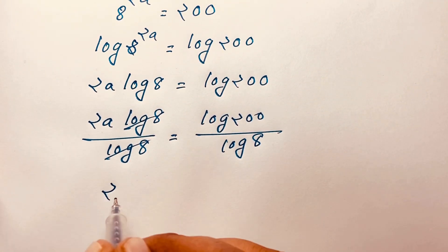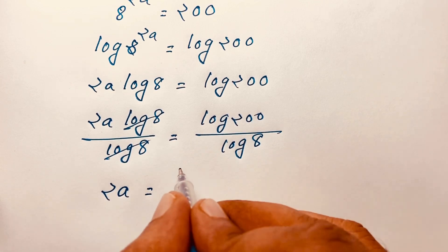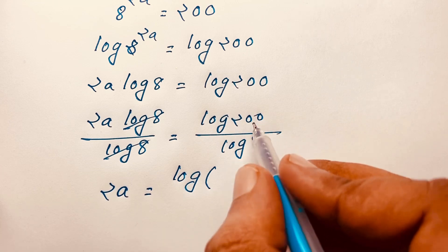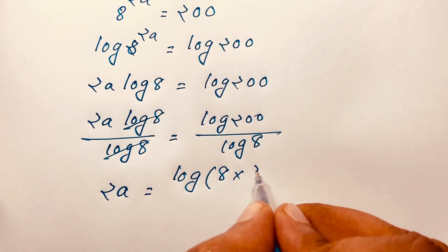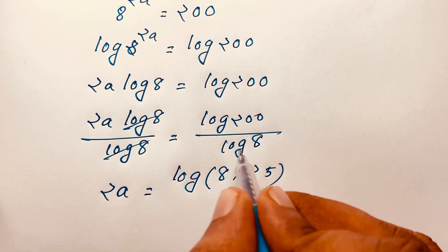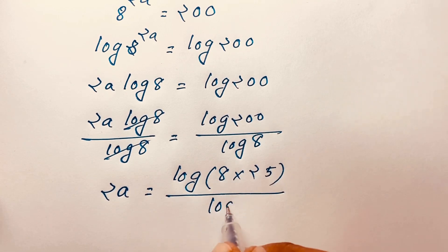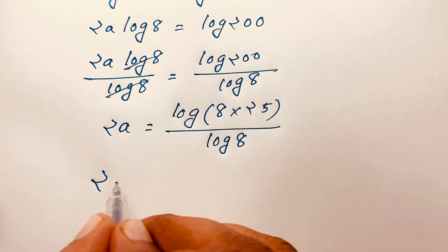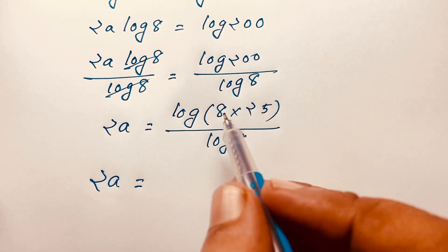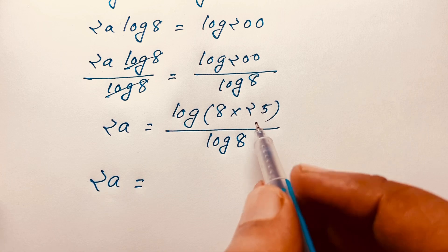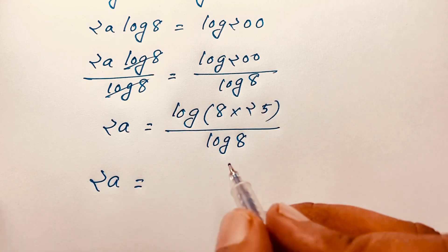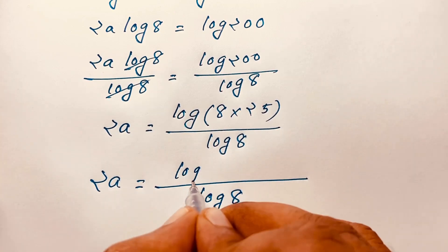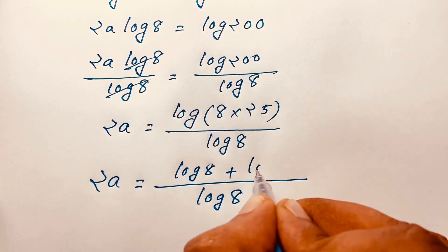Log8 and log8 cancel out, so 2a equals log200 / log8. I consider that 200 equals 8 times 25. Now using the log product rule — log(ab) equals log(a) + log(b) — I can write log(8×25) as log8 + log25.